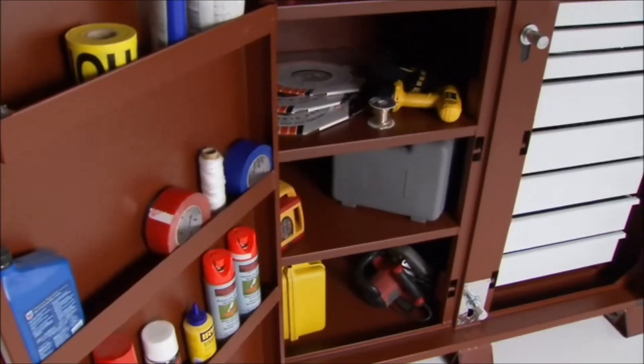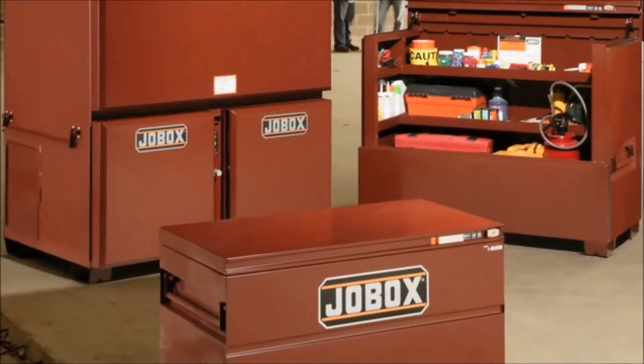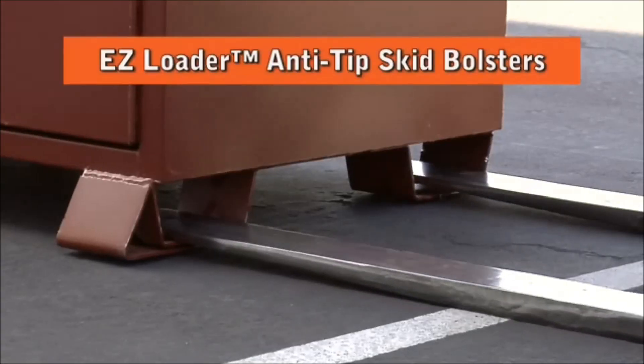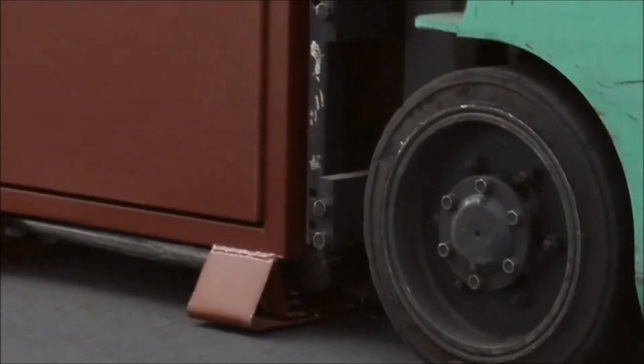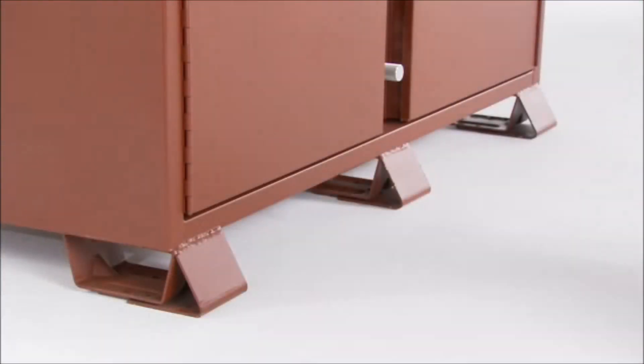The new JobBox two-door drawer cabinet joins the family of on-site storage solutions featuring the revolutionary designs of the new easy loader anti-tip skid bolster, allowing access from all four sides and extending to the front to help prevent tipping.